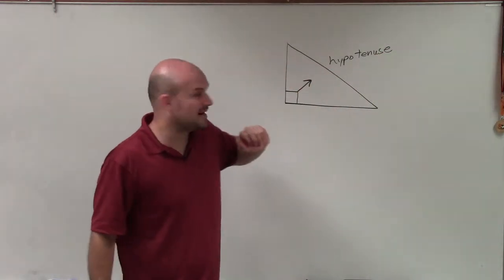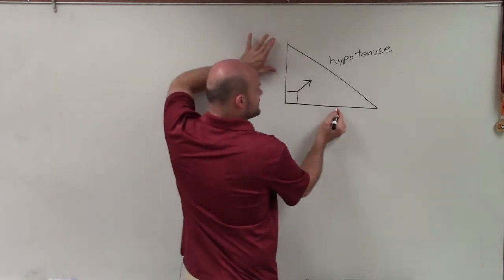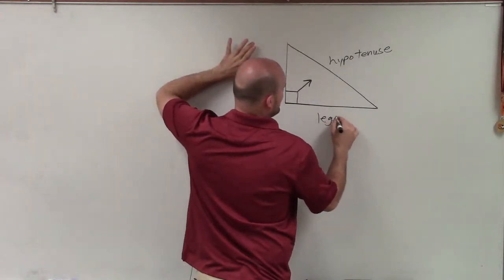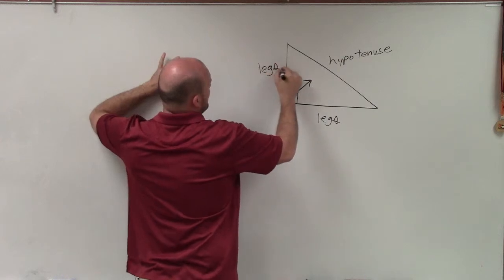That's our hypotenuse. Then these other two are what we call the legs. They are sides of the triangle, but we call them the legs.